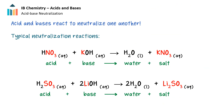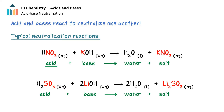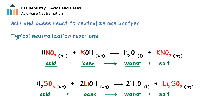Acids and bases react to neutralize one another. In a classical neutralization reaction, the hydrogen ion from the acid reacts with the hydroxide ion to form water and a salt. This is the case in the following reactions. In this first reaction, nitric acid reacts with potassium hydroxide to form water and a salt, potassium nitrate. You can see how the salt is made up of the ions from the acid and base, and the water molecule is made up of the hydrogen and hydroxide ions, again from the acid and the base.